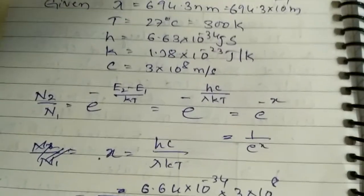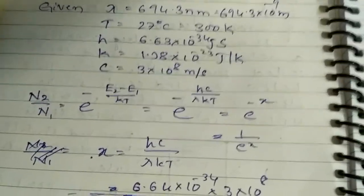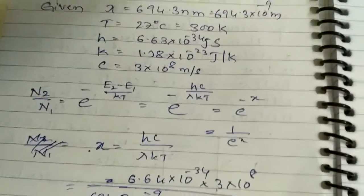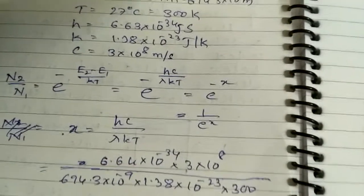As we already know, N2/N1 = e^(-(E2-E1)/kT). To excite the atom, electromagnetic energy is used, so the energy difference E2 - E1 = hc/λ.